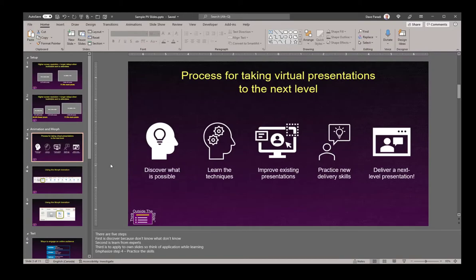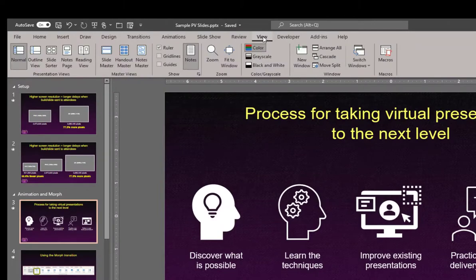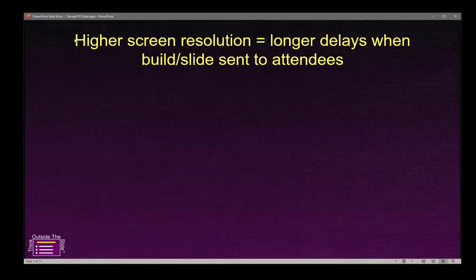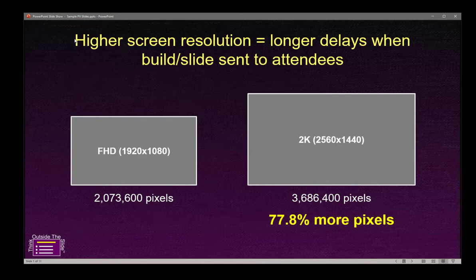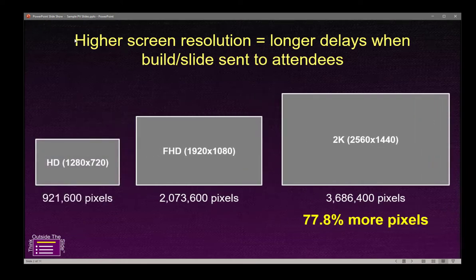There are three ways to enter Reading View within PowerPoint. The first is on the View ribbon — there's a button for Reading View, and when you click it, it puts the presentation into Reading View. However, it will always start with the first slide and cannot start in the middle of your presentation.